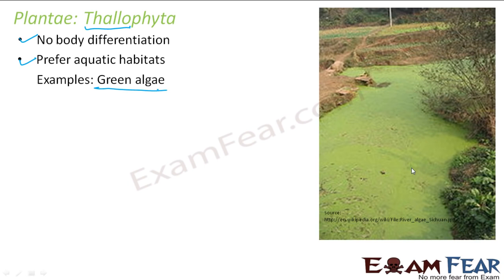We have already spoken about algae in previous lessons. We spoke about blue-green algae, also known as cyanobacteria — that algae falls under the monera kingdom, because it has more characteristics similar to bacteria. Some red and brown algae fall under the kingdom Protista; we spoke about diatoms and dinoflagellates. The remaining algae — be it green, red, or brown algae — fall under the plant kingdom. Please remember: not all algae fall under one kingdom. Some algae are monera, some are Protista, and all others are plants.